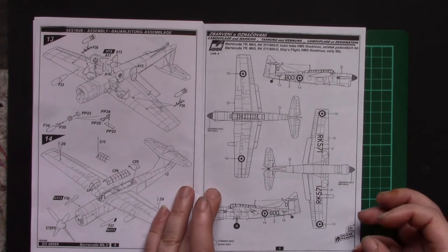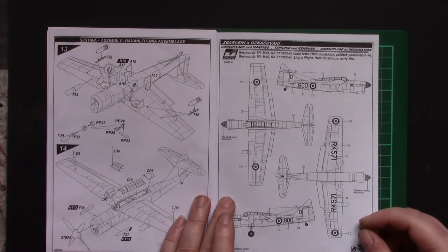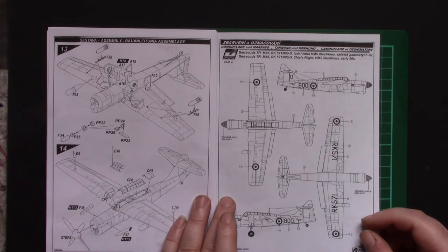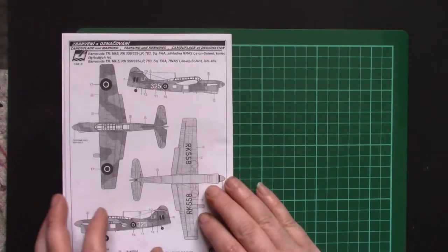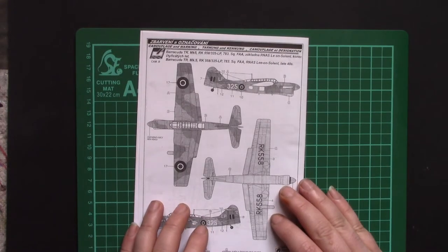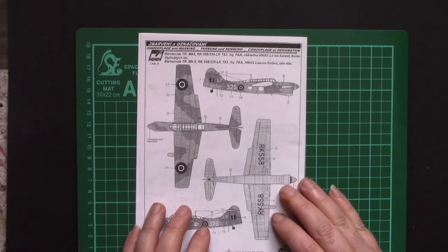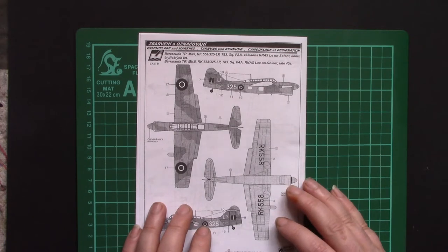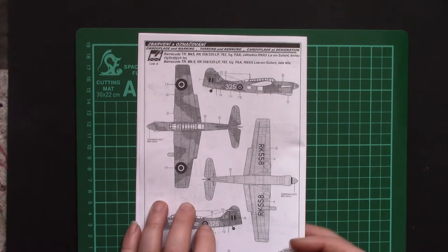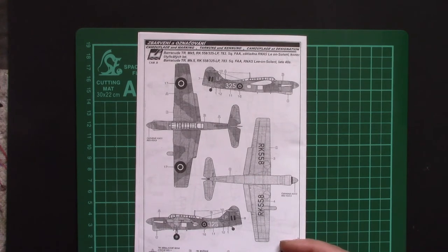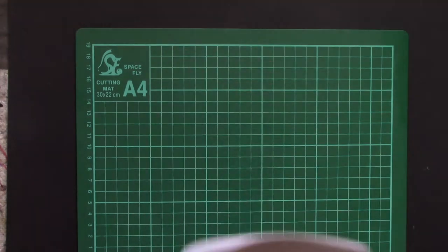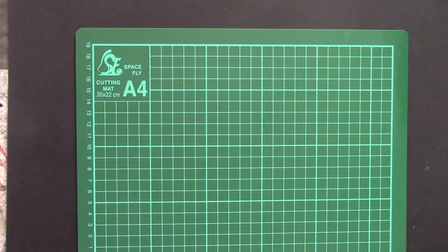And we've got markings for one from HMS Illustrious in the early 50s, and one from Fleet Air Arm Leon Solent late 40s. So that would be land based rather than carrier based. Anyway, as you can see, we've got a bit of a build on our hands on this one. Kind of looking forward to it.